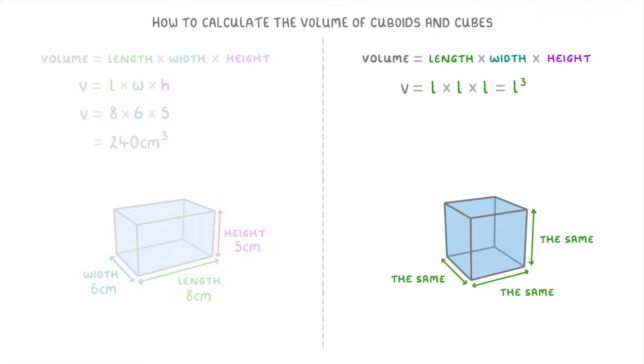So if the length of the edges in our cube were 5cm, then to find the volume we'd just do 5 times 5 times 5, or 5 cubed, which in either case would give us 125cm³.